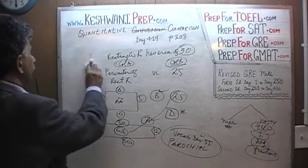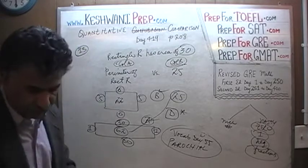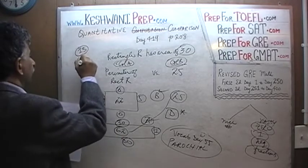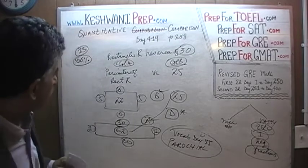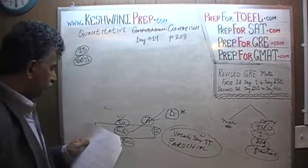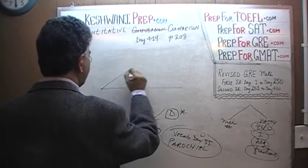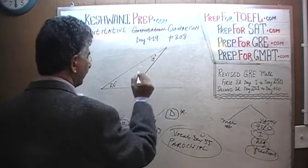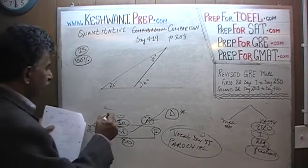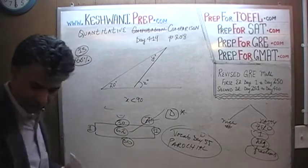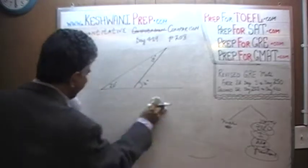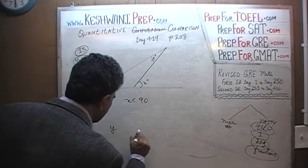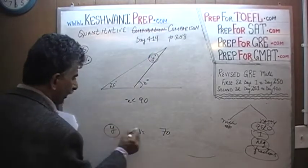Problem number 13 is another geometry question. The percentile increases to 66% — two thirds of the people have no trouble with this one. Here we have a triangle. We are told one angle is x degrees, another is 20 degrees, and the third is y degrees. We are also told that x is less than 90, and we are being asked to compare y versus 70.